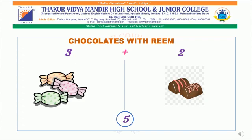Then again, mother gave Rim two more chocolates. Now Rim was very happy. She had many chocolates. Come on, students! Let us count all the chocolates together: 1, 2, 3, 4, 5. So now, Rim has a total of five chocolates.